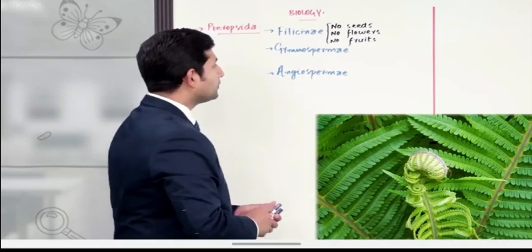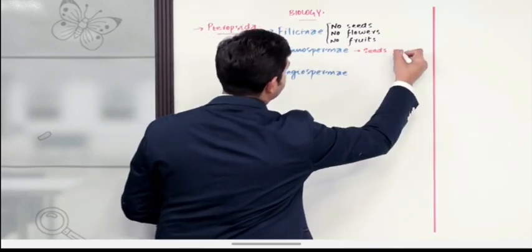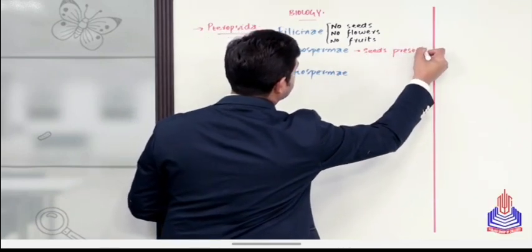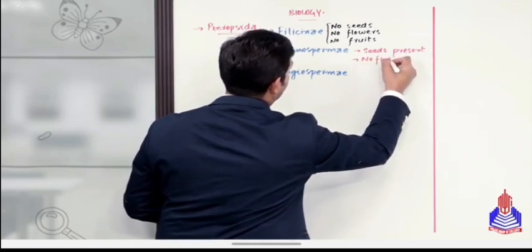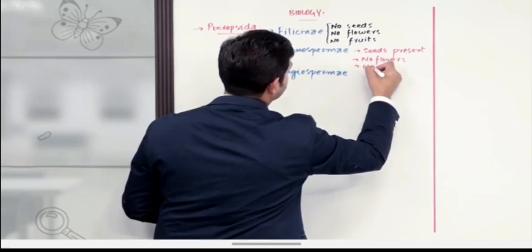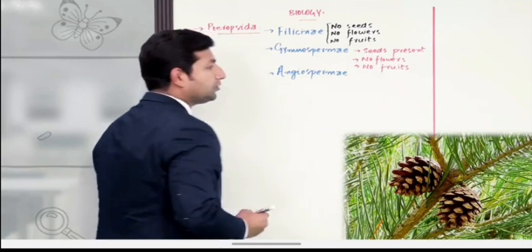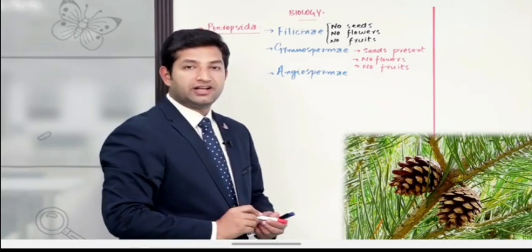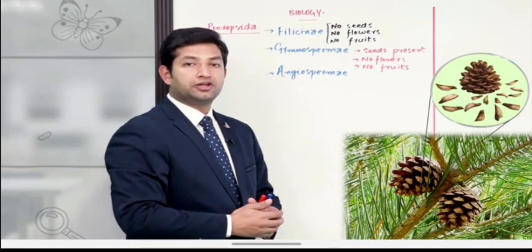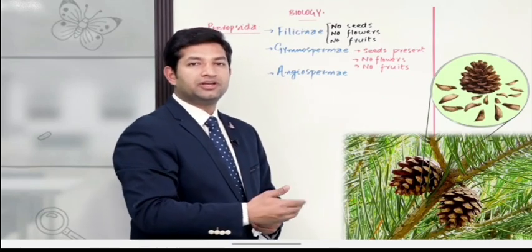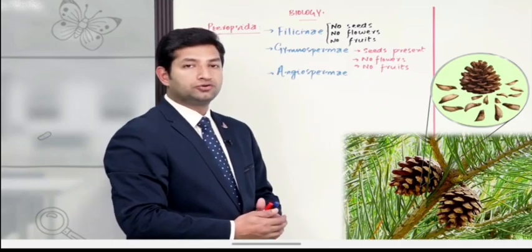दूसरी तरफ, Gymnospermae की अगर हम बात करें, तो इनमें seeds present हैं, but no flowers and no fruits. इनके अंदर ना हमें कोई फूल नज़र आएंगे, ना कोई फल नज़र आएंगे, लेकिन बीज जो पैदा हो रहे हैं उसकी वजह से हम इनको seeded plants कहते हैं। जो नाम है इनका Gymnospermae - naked seeded, यानि कि इनके ऊपर कोई cover या कोई shell वगैरह मौजूद नहीं होगा।